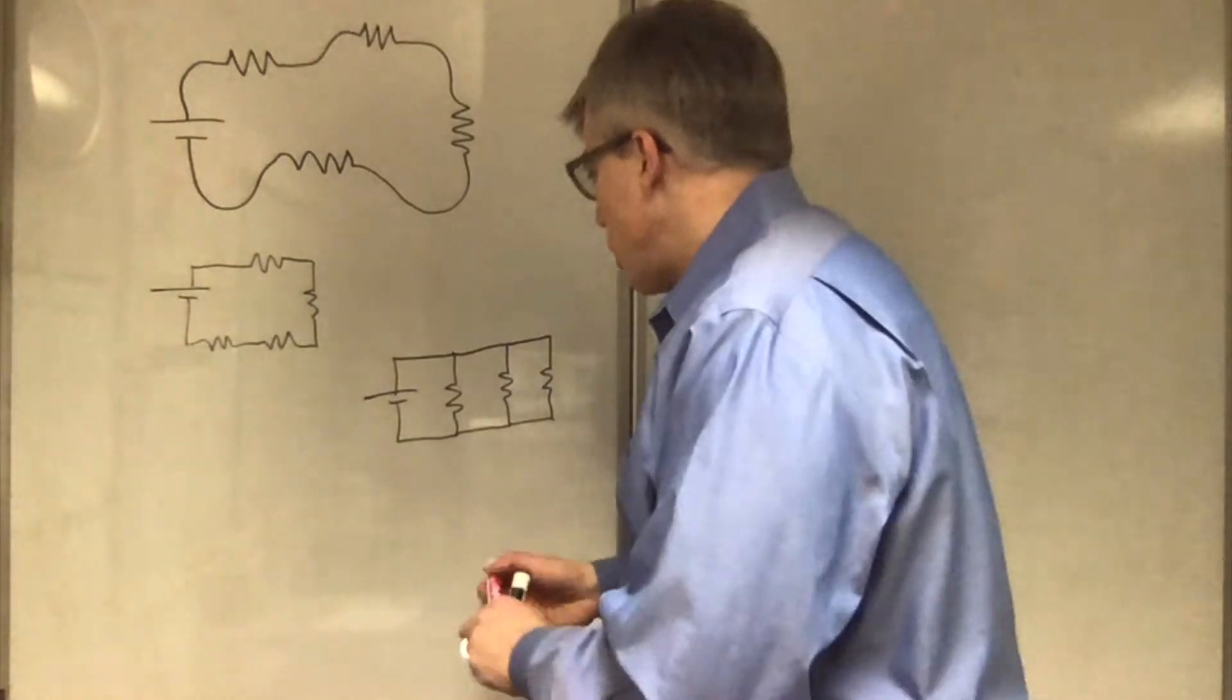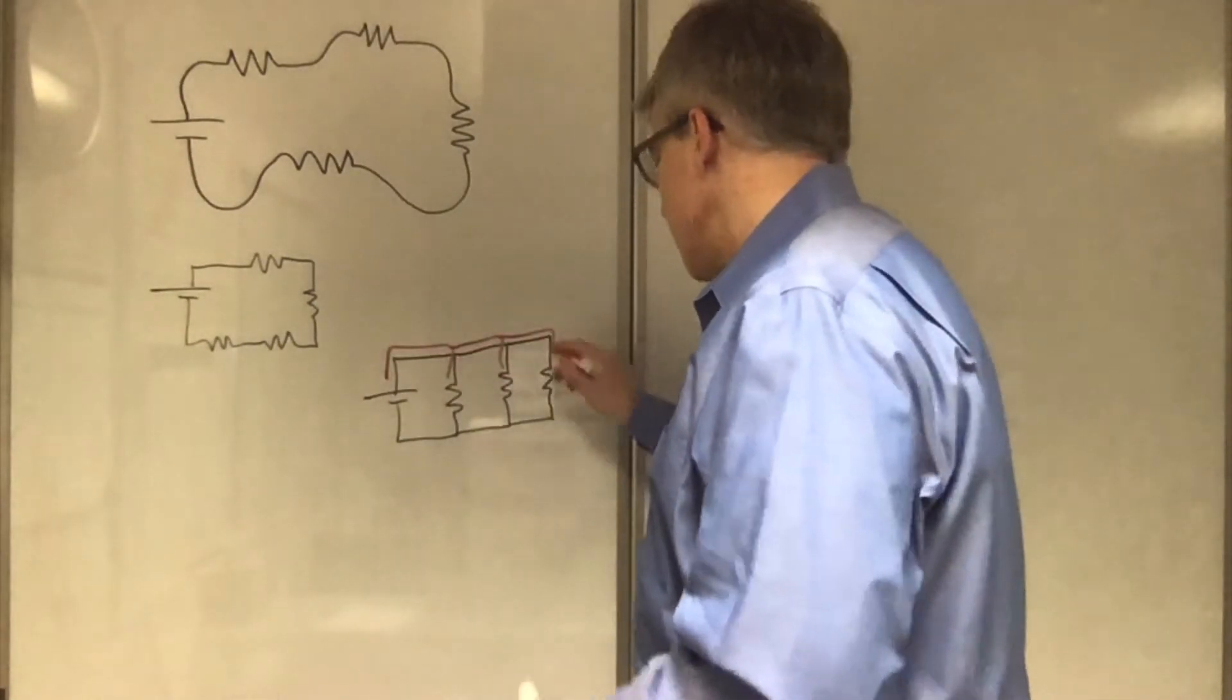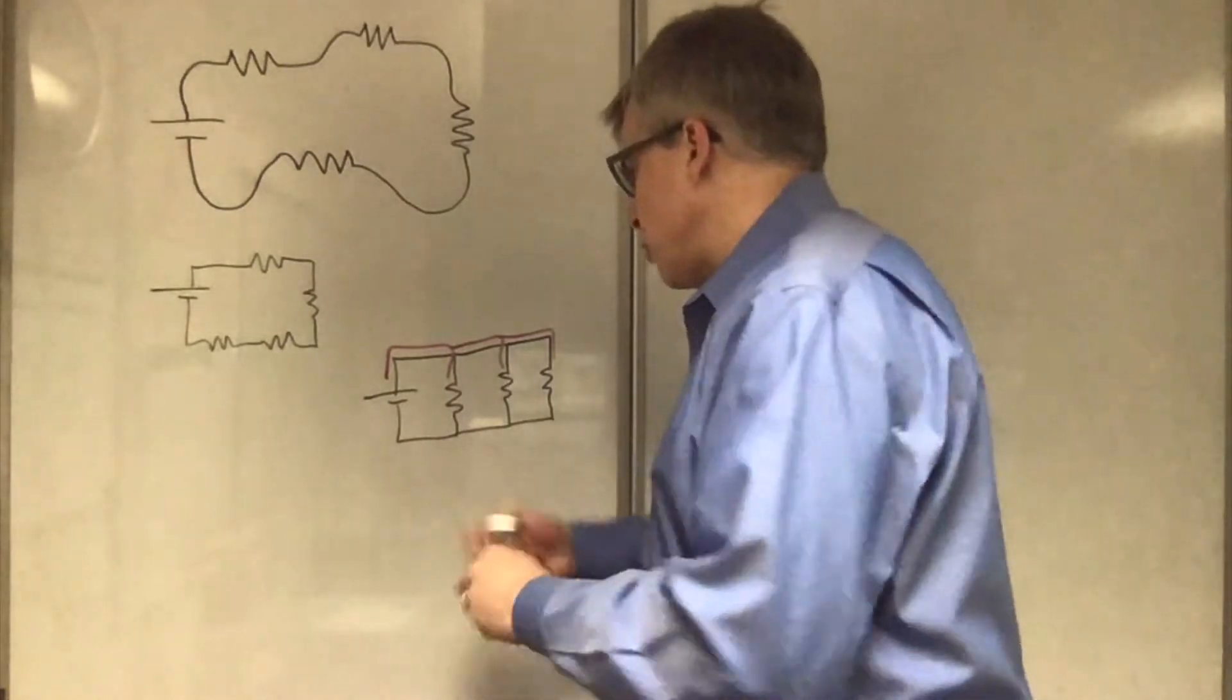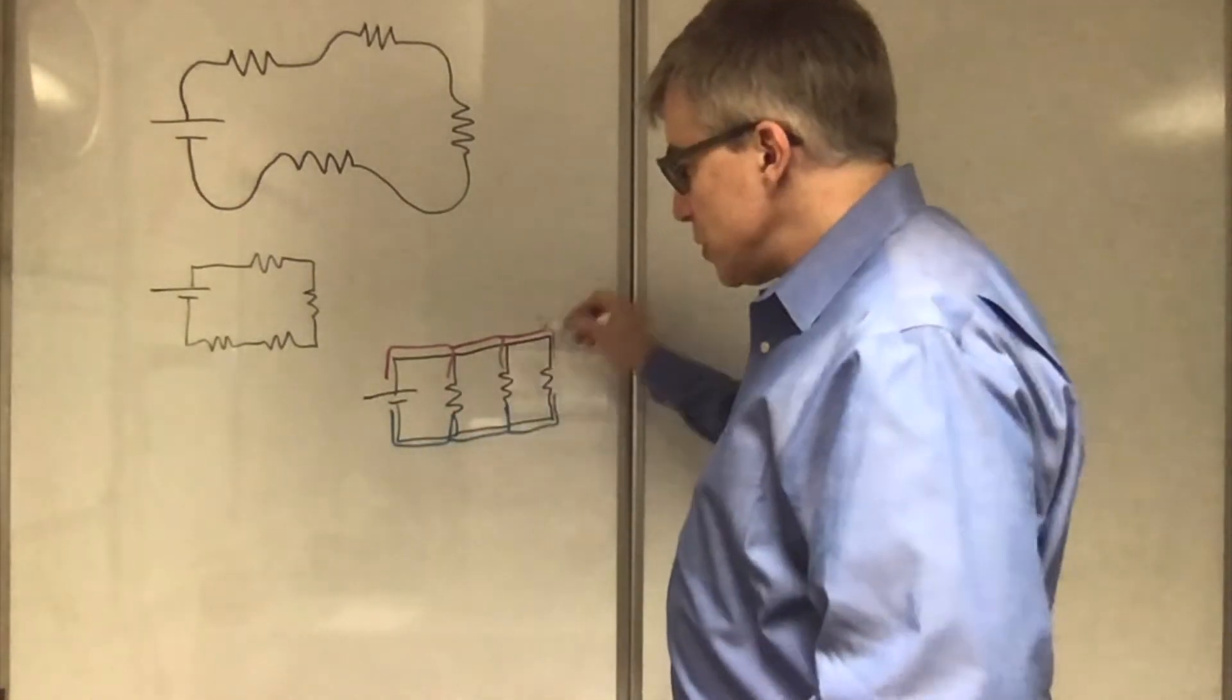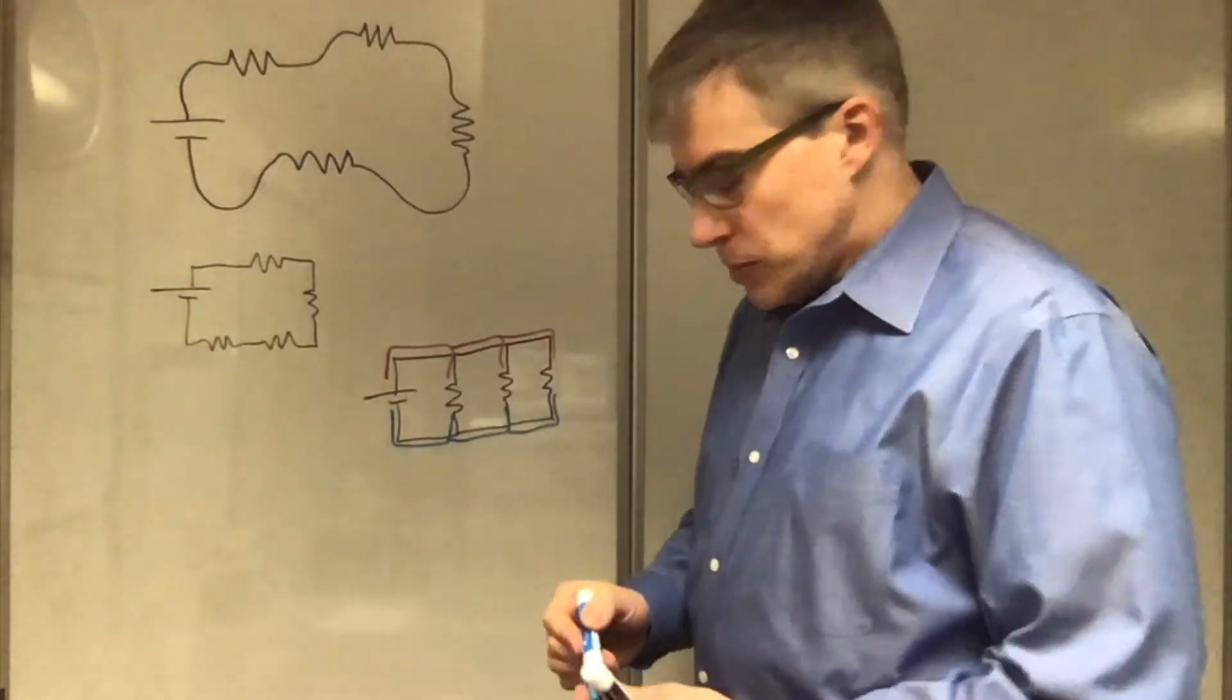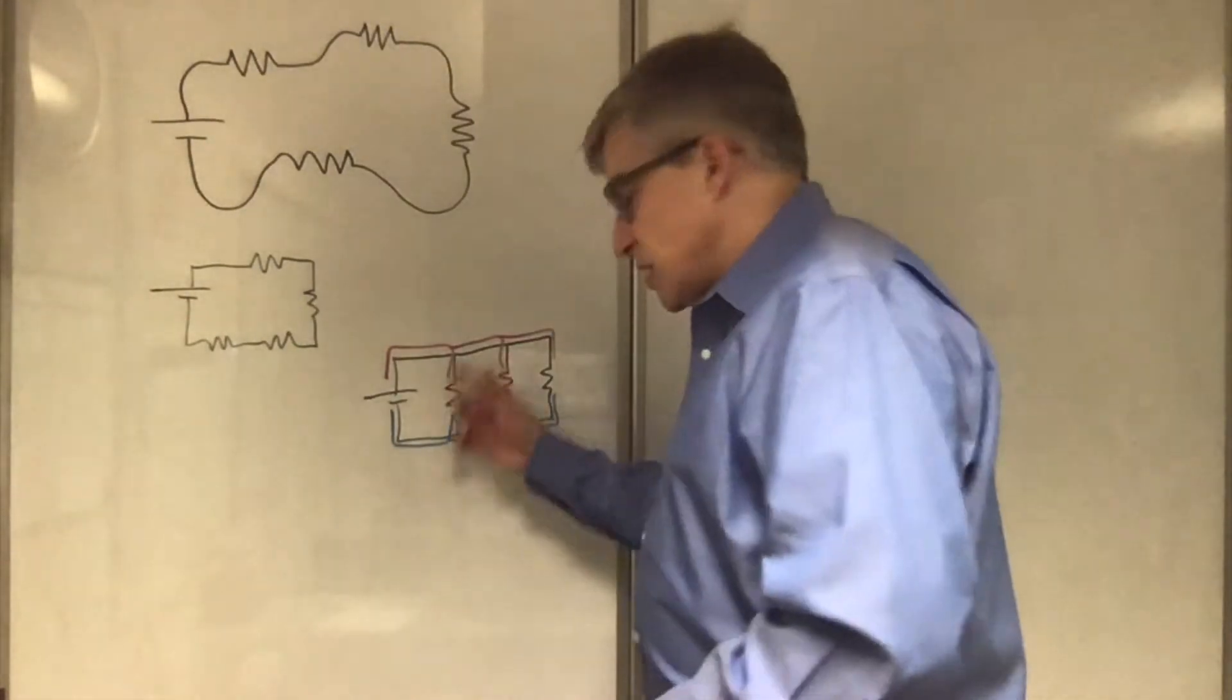This piece of wire is at one voltage, and this piece of wire is at a different voltage. And all three of these resistors are connecting the same two colors, pink and blue here. So they have the same voltage.